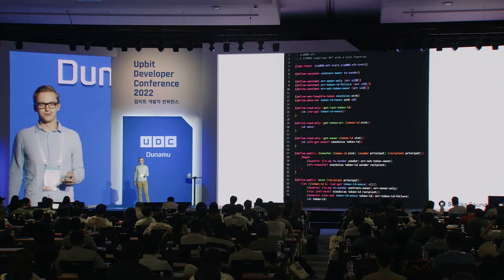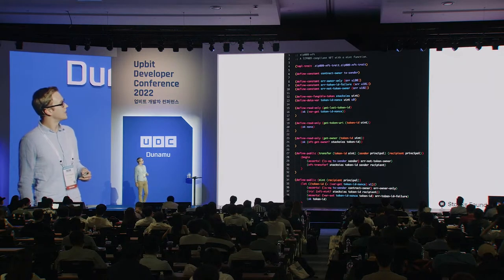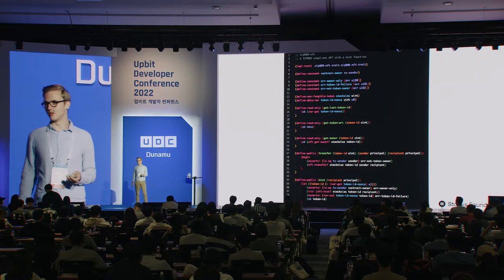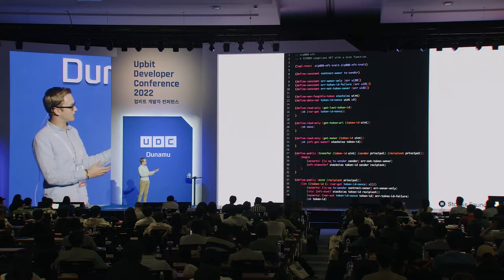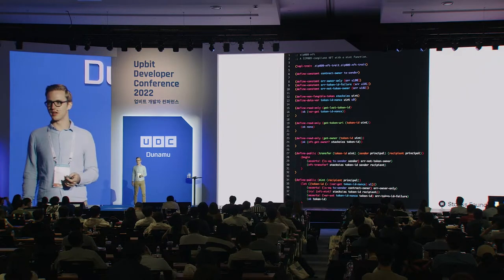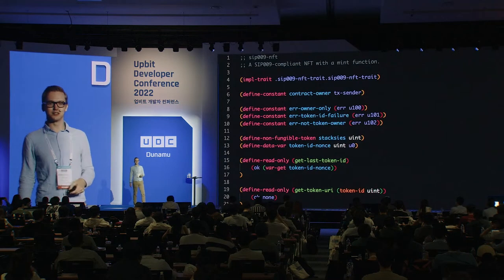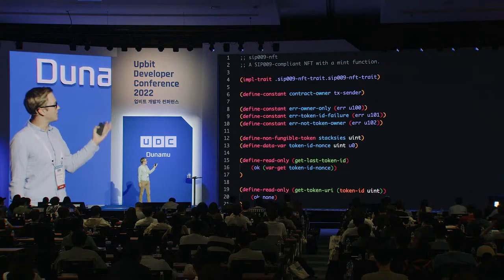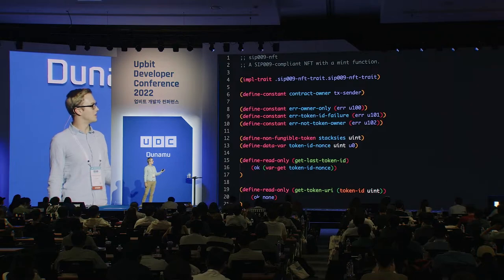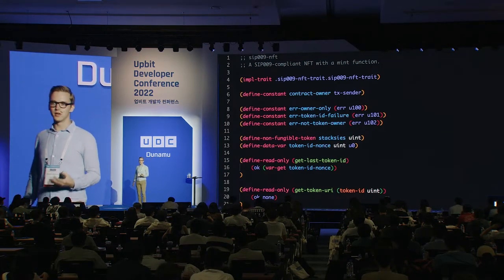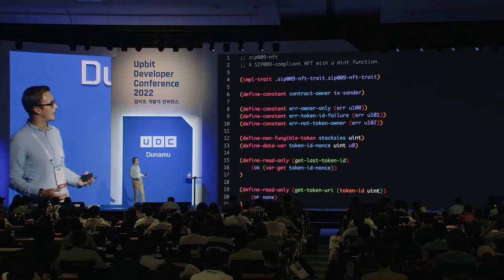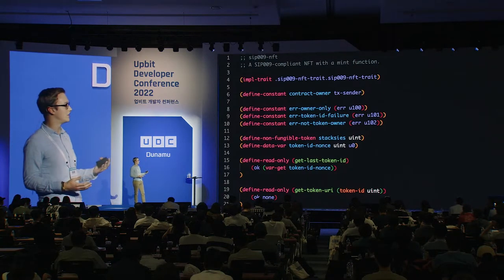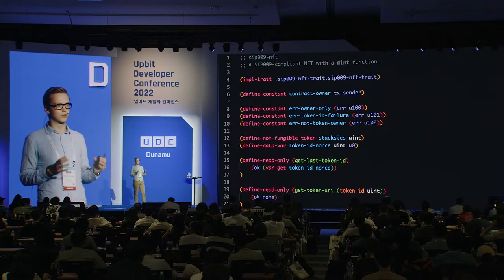Here's a quick overview of what a Clarity smart contract looks like. This contract implements a SIP009 NFT, the equivalent of an ERC-721 on Ethereum. With just 41 lines of code, you can implement a functional NFT. At the top you define constants, and on line 12 you see 'define-non-fungible-token staxis uint' — defining a new NFT called 'staxis' identified by an unsigned integer. Every token ID is a number, though you can use any complex type if you desire.